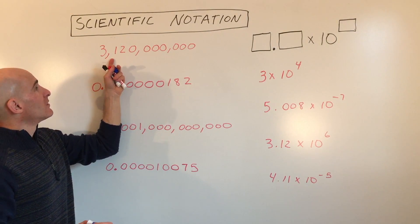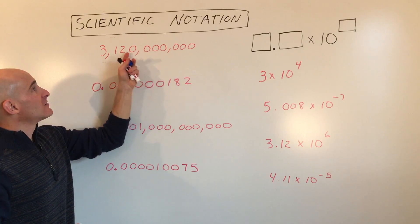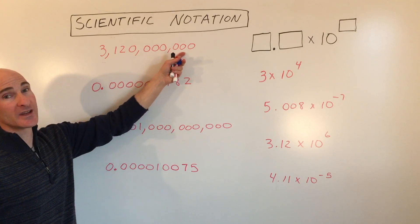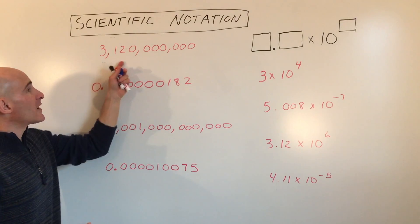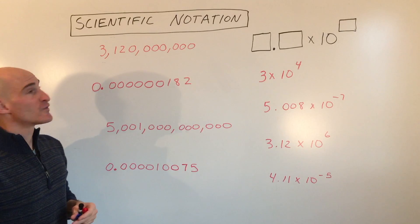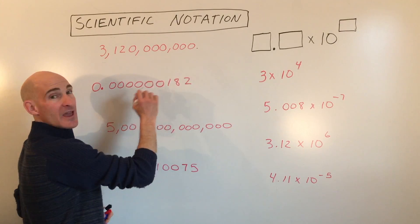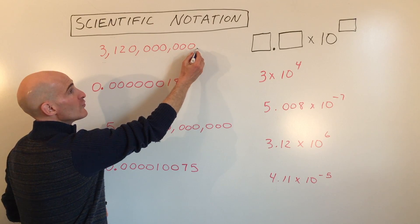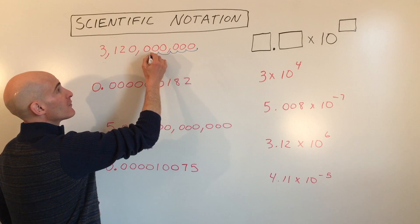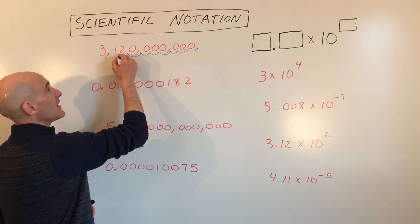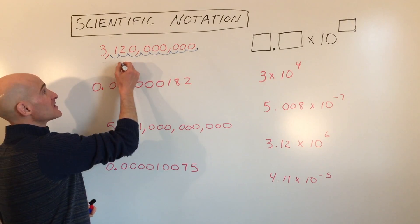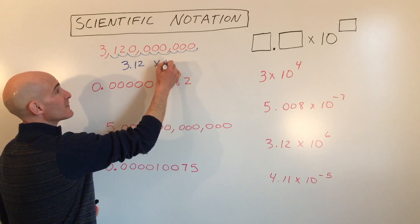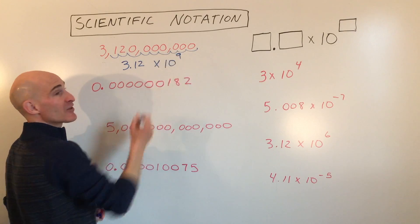Here we have thousands, millions, billions. So this is 3,120,000,000 — a really large number we want to convert into scientific notation form. Right now the decimal point is at the end. Even if it's not written, it's understood to be there. We're going to move it 9 places, so this is going to be 3.12 times 10 to the ninth power.